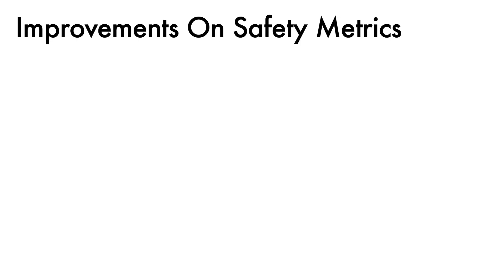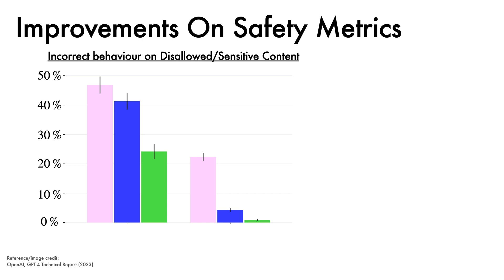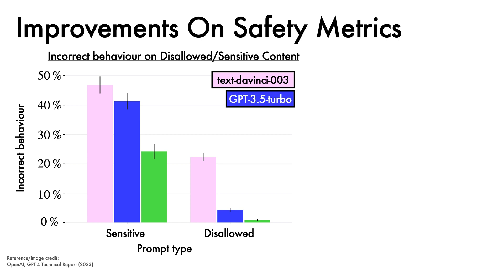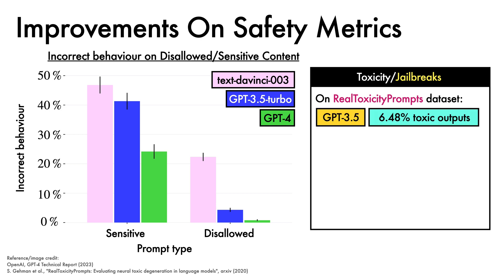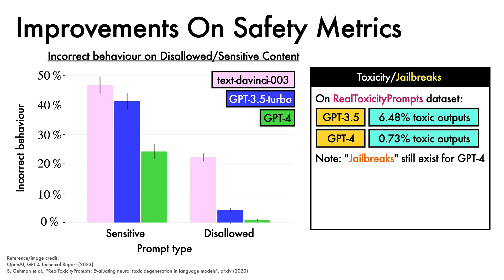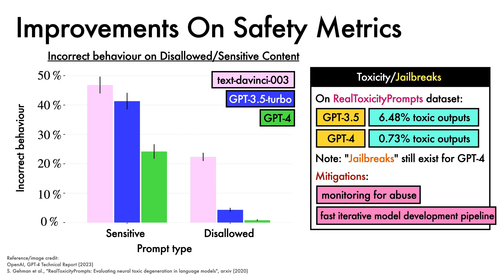Lastly, we'll examine improvements on safety metrics. Here we plot incorrect behaviour on disallowed and sensitive content, with prompt type on the x-axis and the percentage of incorrect behaviour on the y-axis. Relative to Text-DaVinci-003 and GPT-3.5, the GPT-4 model significantly reduces incorrect behaviour. It is also found that on the real toxicity prompts dataset, compared to GPT-3.5 which generates toxic outputs 6.48% of the time, GPT-4 generates toxic outputs just 0.73% of the time. One important final point to note is that there still exist known jailbreaks for GPT-4, in which the model can be coerced into behaviour that violates usage guidelines. Therefore, it's important to put additional mitigations in place, such as monitoring for abuse and maintaining a fast iterative model development pipeline to respond to new developments.